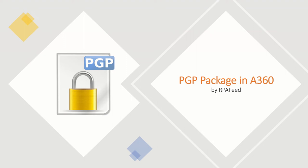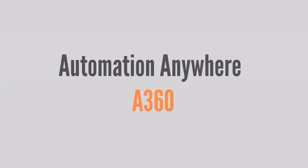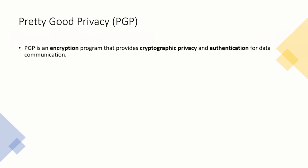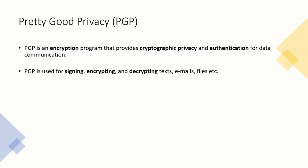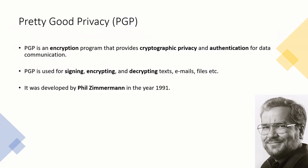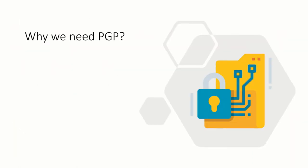Welcome to RPA feed. In today's session we'll be looking at the PGP package in A360. PGP stands for Pretty Good Privacy — it's an encryption program that provides cryptographic privacy and authentication for data. PGP is used for signing, encrypting, and decrypting files, emails, directories, etc. It was developed by Phil Zimmerman in the year 1991.